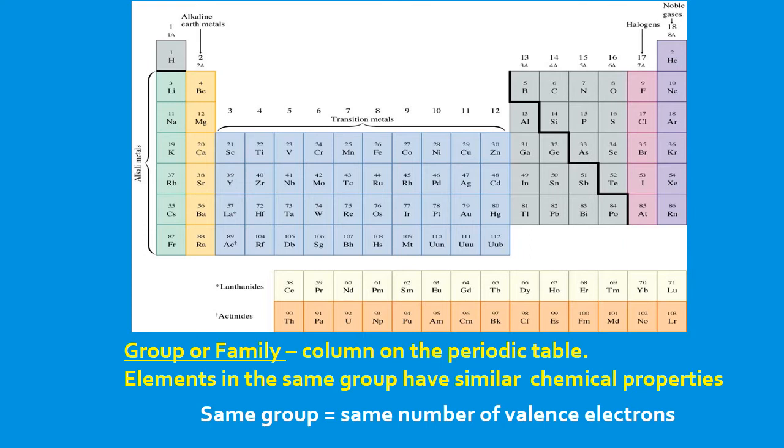The elements in group 1A, excluding hydrogen, so these elements here excluding hydrogen, are called alkali metals and have one valence electron. Elements in group 2A, they're gonna have two valence electrons and they're called alkaline earth metals. The elements in group 7A or group 17, they're gonna have seven valence electrons and they are called the halogens.